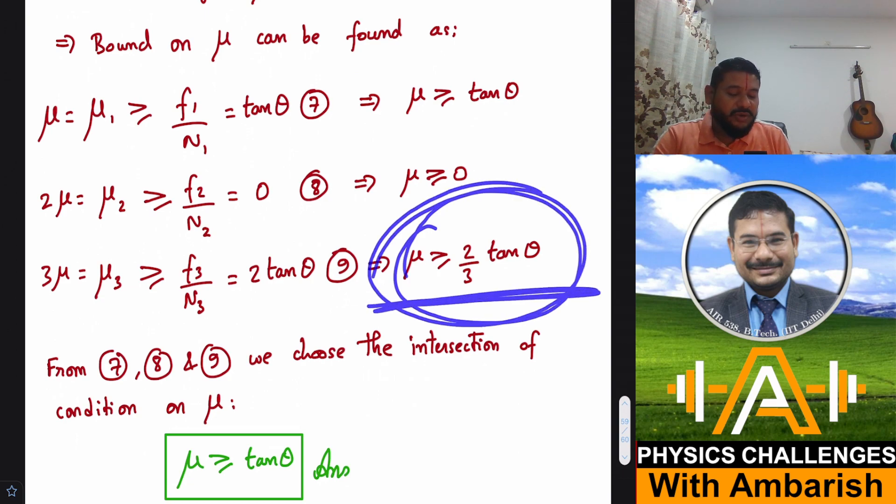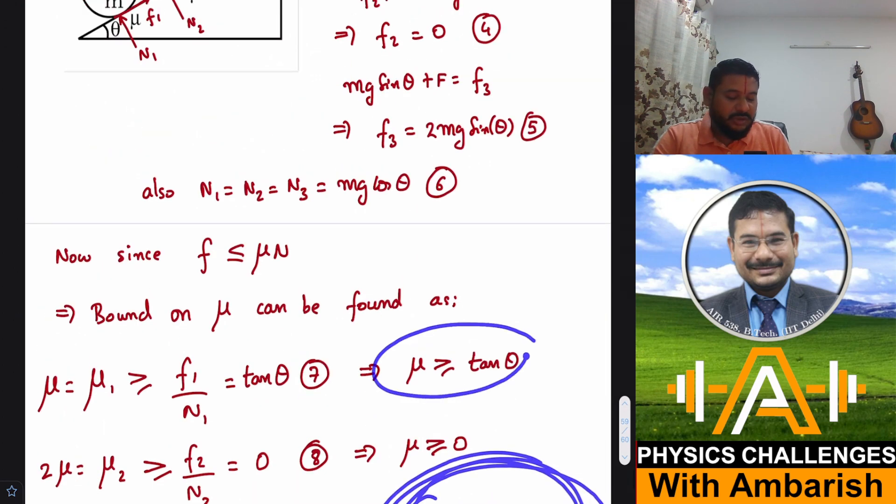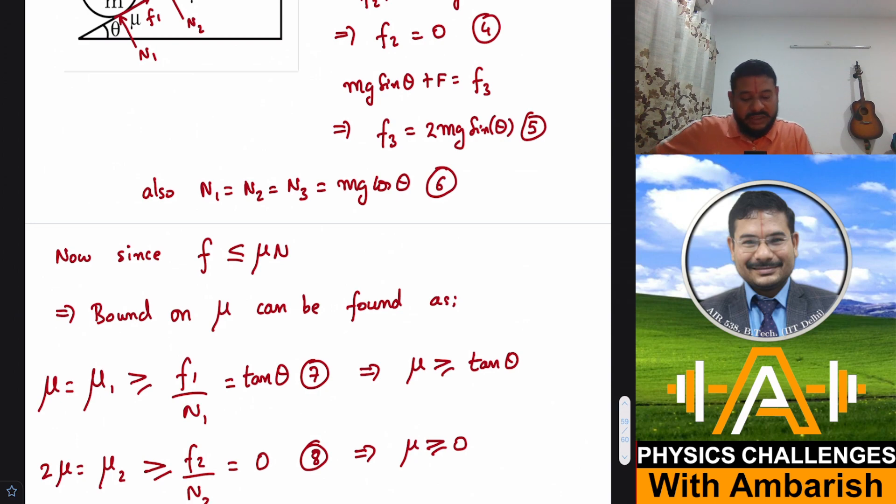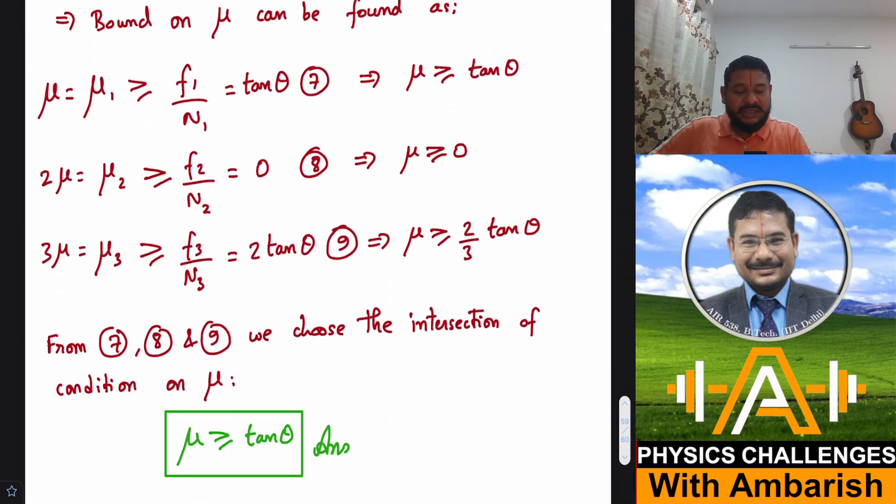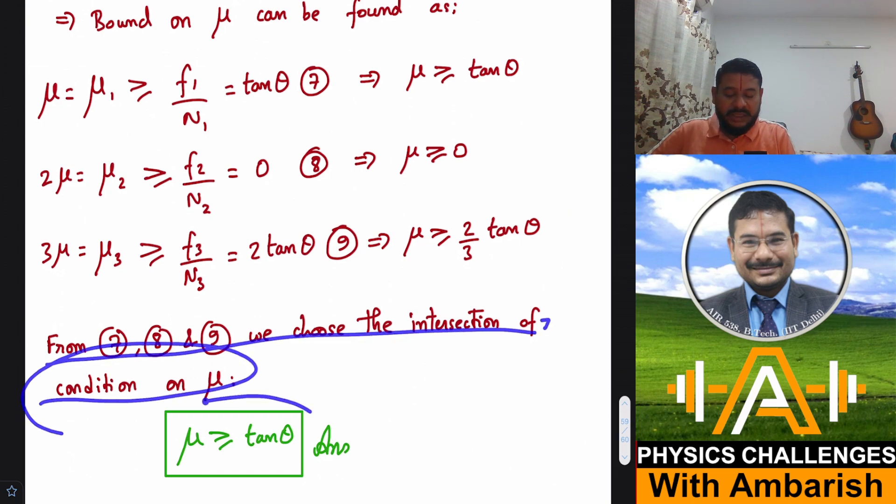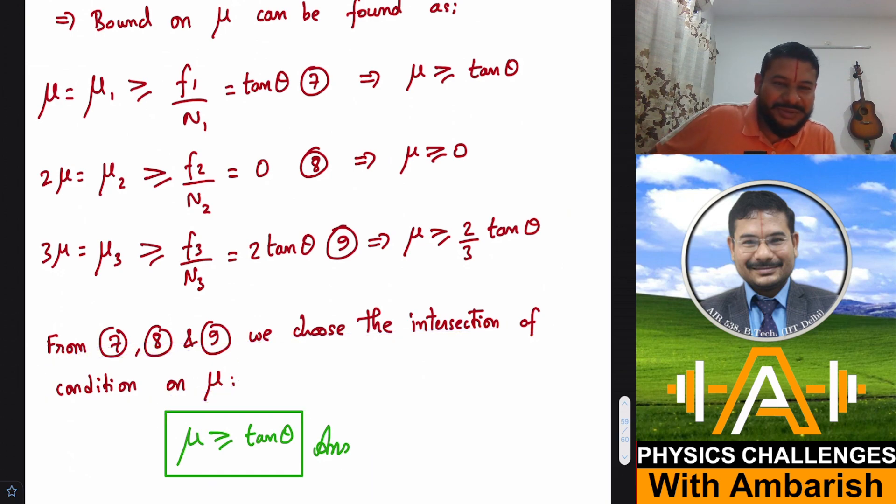The bound on μ is 2/3 tan θ here and tan θ here. Whichever is the stricter bound we go for that, so μ should be greater than tan θ. That's our required answer, the intersection of all three conditions. From equations 7, 8, 9 we choose the intersection condition, so μ should be greater than or equal to tan θ. That's our cute little problem.